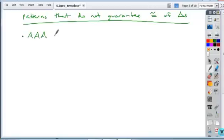The first is AAA. So AAA is really easy to disprove or to find a counterexample, and the way that we look at that is if we took equiangular triangles.